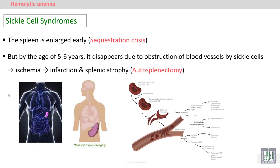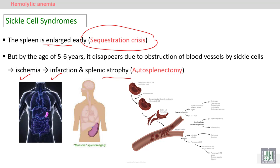During the sequestration crisis, the spleen is enlarged — splenomegaly — early on. But later, after years, due to excessive sequestration and obstruction of blood vessels by sickle cells, ischemia and infarction occur, leading to death of the splenic tissue. This results in splenic atrophy or auto-splenectomy — shrinkage of the spleen. So at the beginning there is massive splenomegaly, but it ends with auto-splenectomy, similar to surgical removal but without surgery.